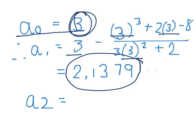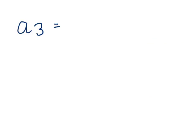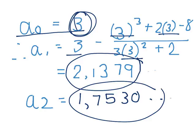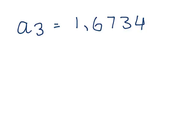For a3, we do exactly the same thing, except now we're going to put 1.7530 in. And we get 1.6734. And you keep on doing this. And eventually, you'll see that you're getting the same number. And that's when you know you've stopped. And this is our x-intercept.